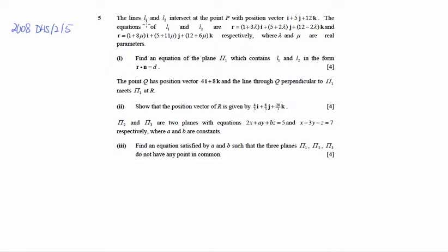Lines L1 and L2 intersect at point P with a given position vector. We are given the equations of the lines, but in a form that is not very useful, so we need to reformat them a little. There is a plane called π1 which contains L1 and L2. This is a pretty straightforward type of question, so let us quickly illustrate and see what we are dealing with.